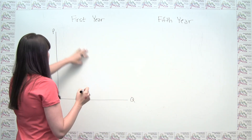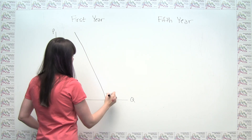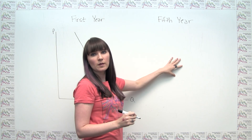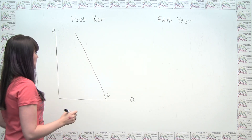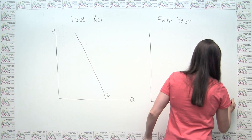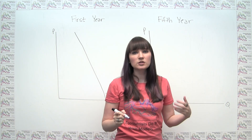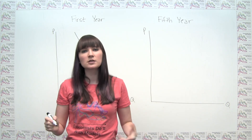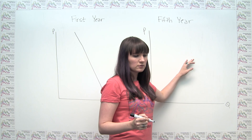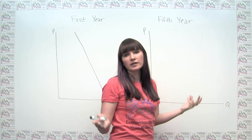For any given change in price of heating oil, consumers are going to be able to do less about it in terms of changing their quantity in the first year than in the fifth year. Demand in the fifth year is going to be more price elastic, because there are more options and consumers have more ability to change their habits — change where they live, the type of clothes they wear, how many blankets they own, etc.